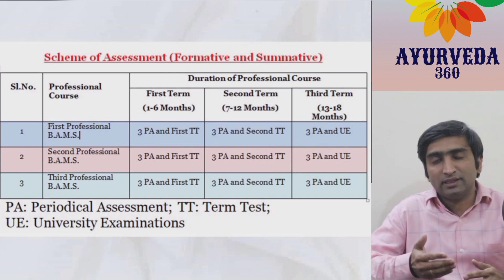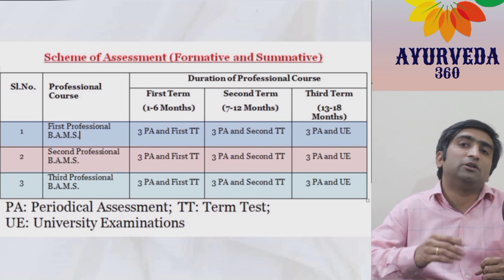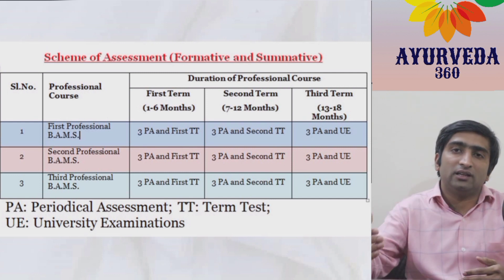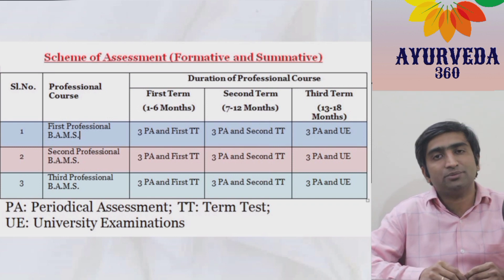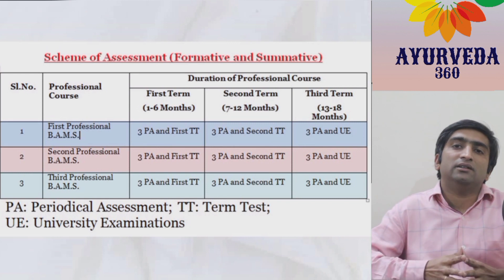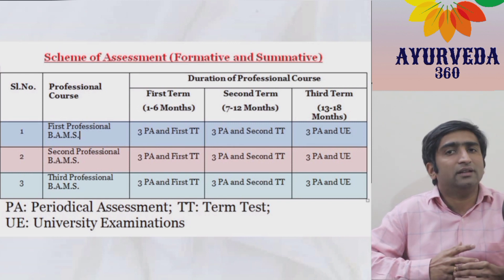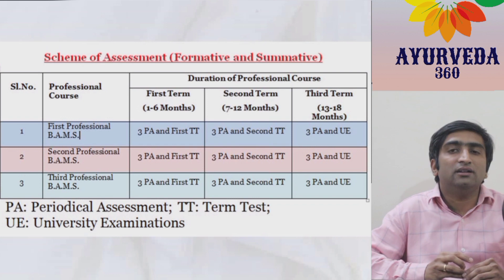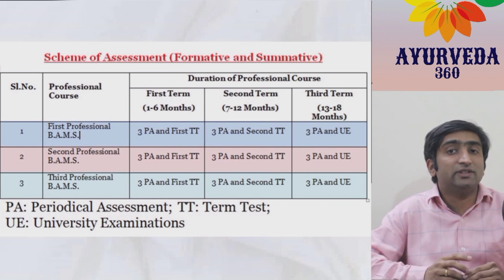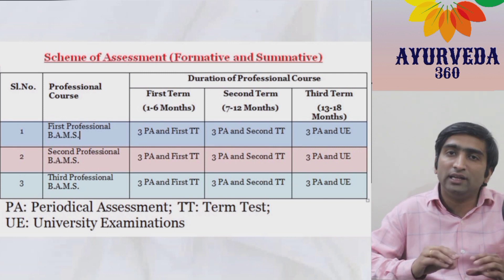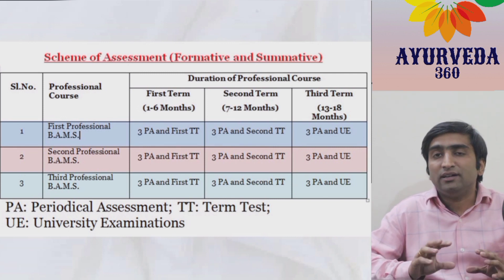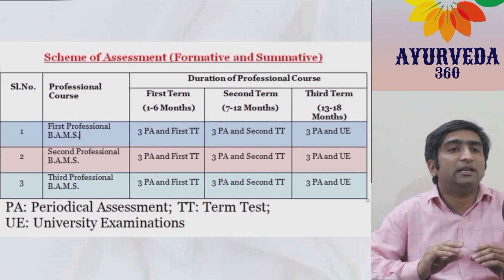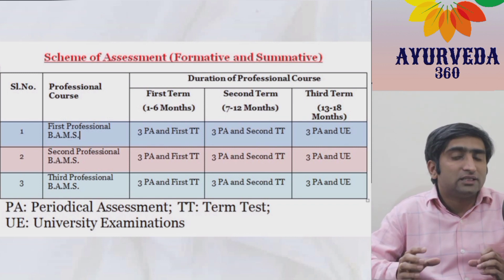From April 1st, 2024, in the same example, the second term starts and goes up to September 2024. The same pattern follows — the teacher covers the next 40% of the syllabus (30% in the first term, 40% in the second term), with periodic assessments and multiple methodologies adopted. At the end of the second term — exactly at one year — the student is given a second term test. In the third term, the remaining 30% of the syllabus is completed, but there is no term test; only periodical assessment continues.